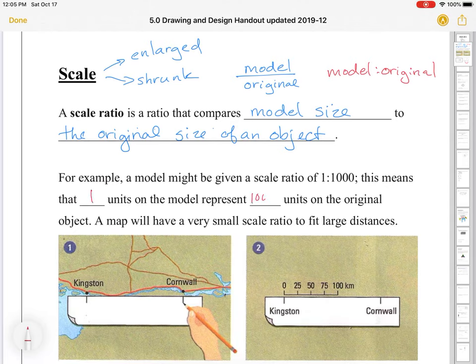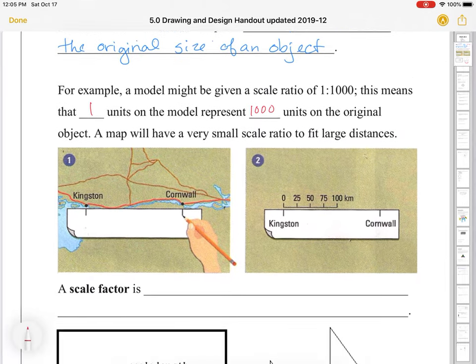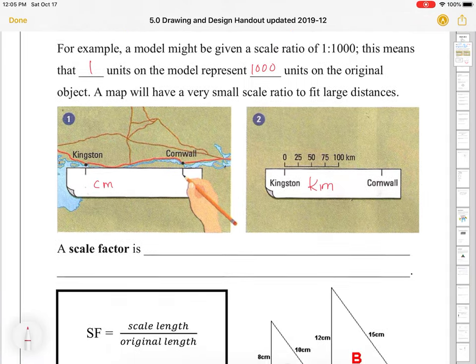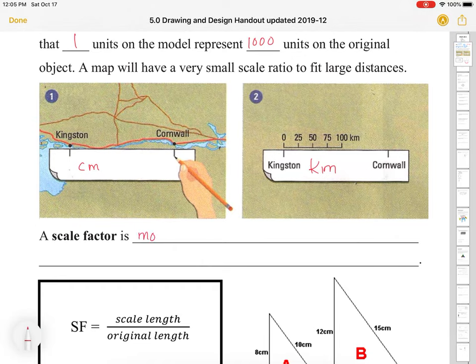For example, a model might be given a scale ratio of 1 to 1,000. That means that one unit on the model represents 1,000 units on the original. A map is going to have a very small scale ratio to fit large distances. So for example, if we have this map of Kingston to Cornwall, on the map it might be centimeters, and in real life it might be kilometers.